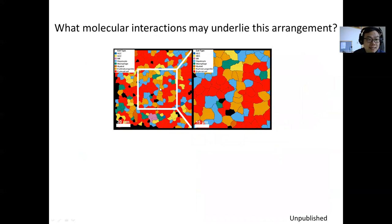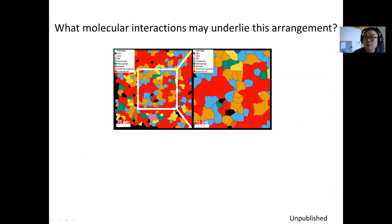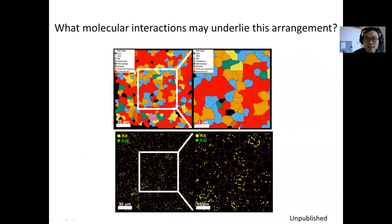You can see this in our raw images, with hepatocytes shown in cyan and proerythroblasts in orange. Further, regarding the molecular interactions underlying this arrangement, from our RNA profiles we found that kit and the kit ligand seem to be enriched in these cell pairs and may underlie this spatial arrangement of the cells.